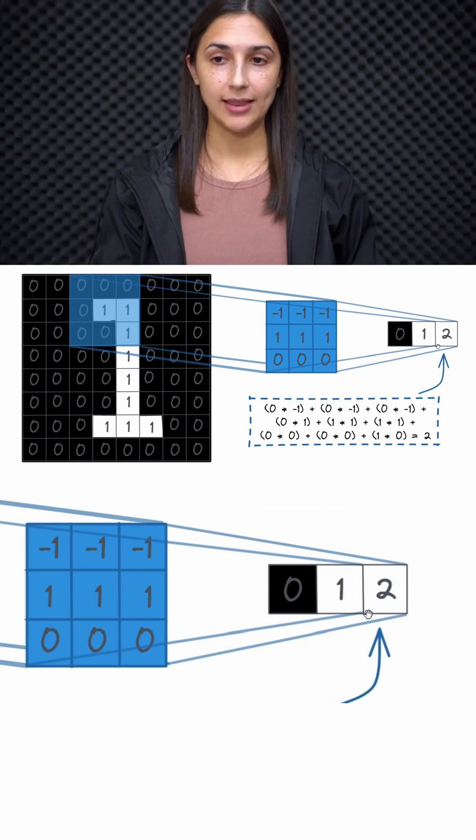Again, this positive output value in this case is indicative that our filter detected a top edge again now on this block of input. So first, it detected a top edge right here, and then when we moved right by a stride of 1, the filter now has detected the top edge right here.